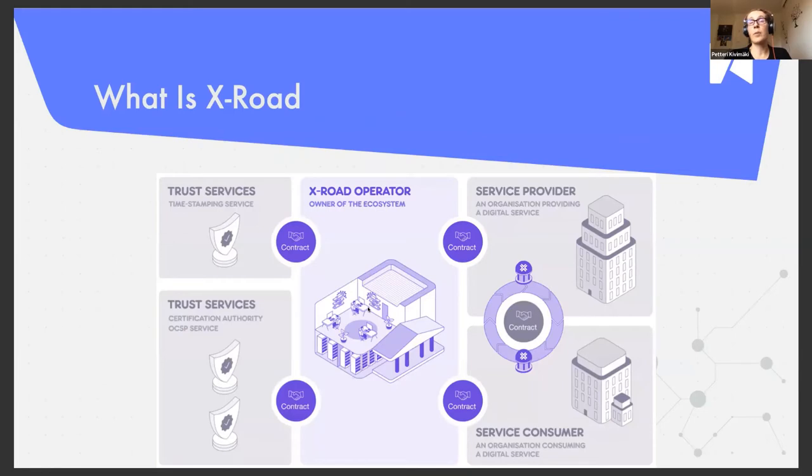First of all, the X-Road operator is the organization that is responsible for running the ecosystem, both technically and also defining the rules and guidelines that the ecosystem must follow. The operator also decides who is allowed to join the ecosystem. For example, in Finland and in Estonia, anyone is allowed to join. So the ecosystem is, of course, for public sector, but also private companies, municipalities, nonprofit organizations. Anyone can join.